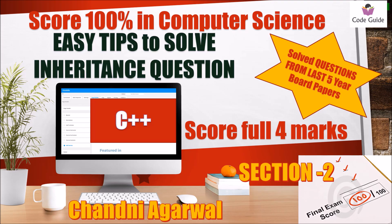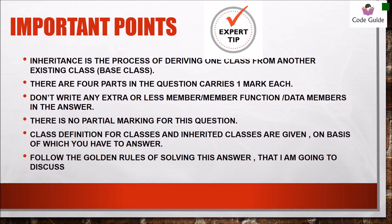Dear students, today I am going to discuss easy tips to solve inheritance questions. This is from section 2 and it carries full four marks. Some important points: all of you know the definition of inheritance — this is a process of deriving one class from another existing class, and that class acts as a base class. In the question you will see four parts that carry one mark each. There is no partial marking, so don't write any extra or fewer member functions or data members. Class definitions for base and inherited classes are given, and on that basis you have to answer the question.